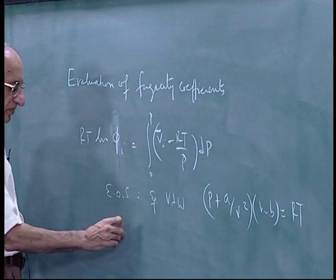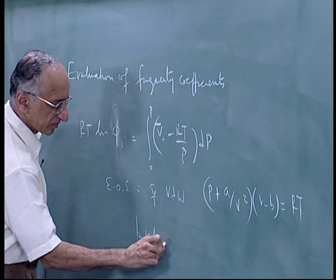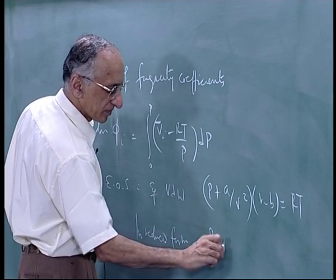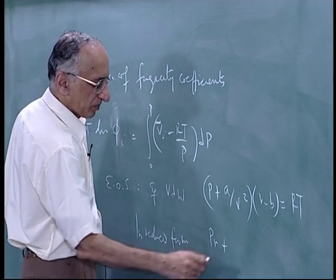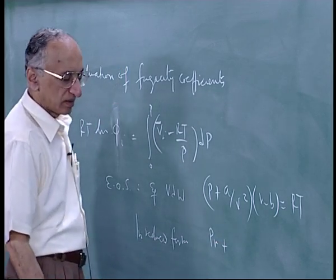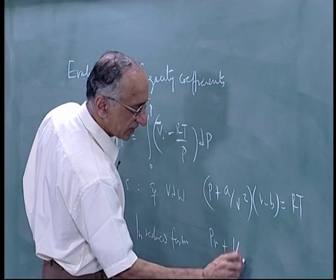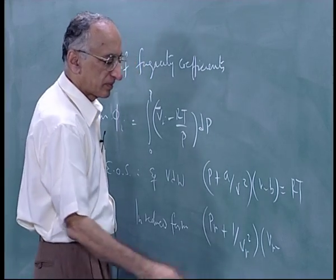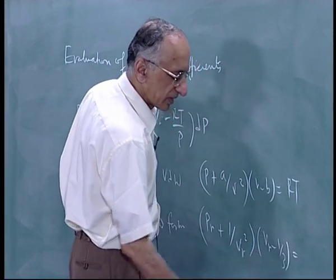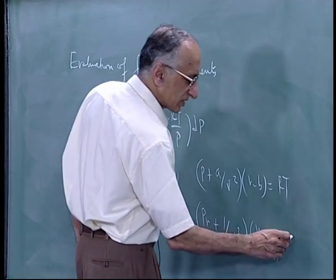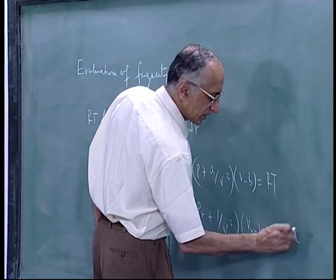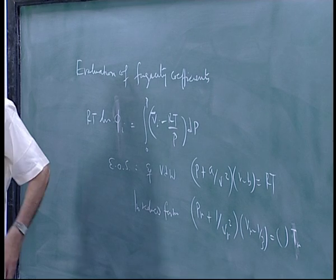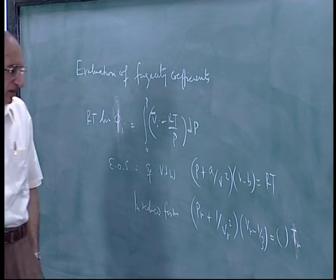Think in reduced form. We have p_r plus some constant over v_r squared, times v_r minus 3, equals some constant times t_r. The constant is 8/3 or something like that — I do not remember exactly.